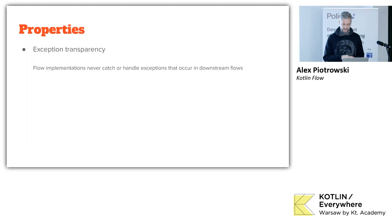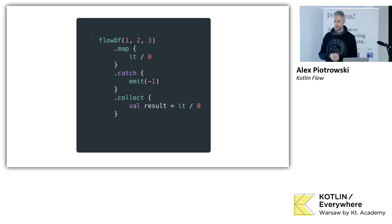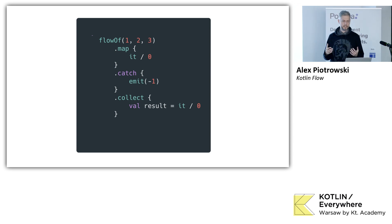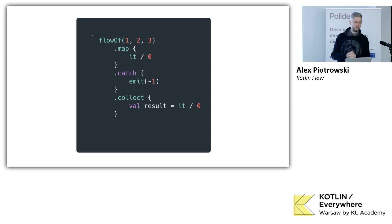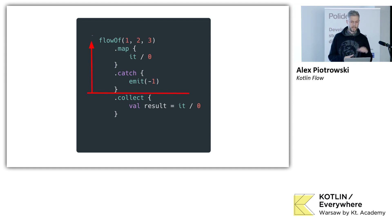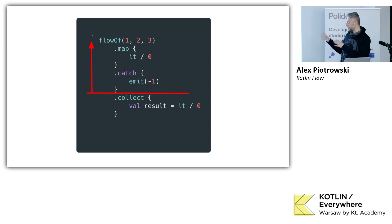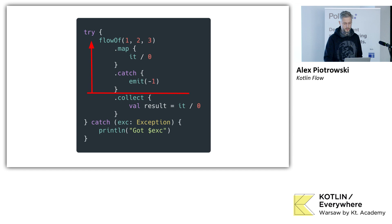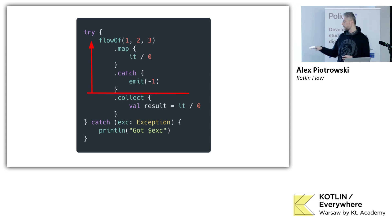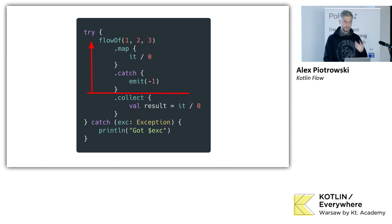The second property is exception transparency. Here we have a flow with three values. Then we do something brilliant — we divide a value by zero, which is obviously an exception. Then we catch this and emit minus one. Then in the collect block we do another silly thing — we divide by zero again. So we have two exceptions here but only one catch. What it means is that catch will catch all exceptions happening above it in the stream. But what's going to happen with the second exception happening inside of collect? At this point, that's going to crash our app. So we can use try-catch for the remaining exception. The catch operator works upstream. If there is no catch in the stream, we need to use a try-catch block. Exception transparency is the second property.